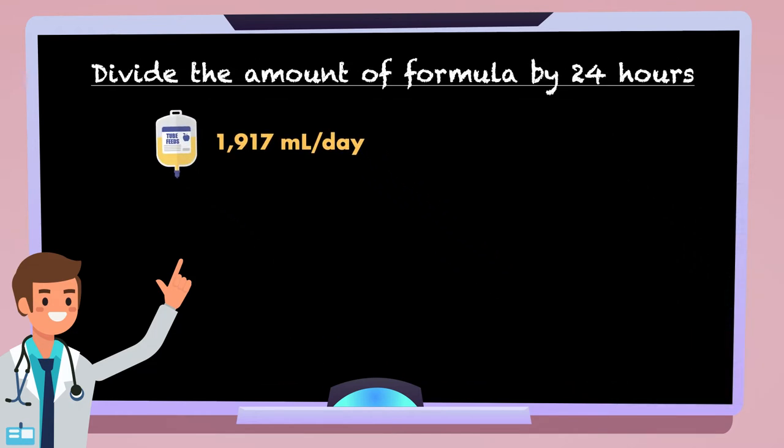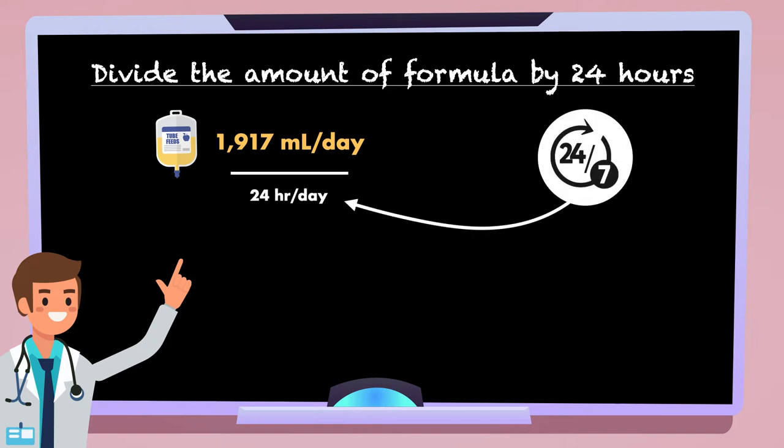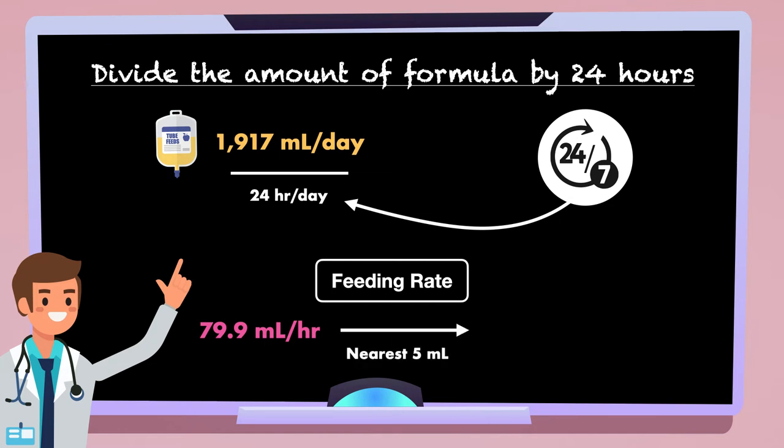Next, we divide the amount of formula by 24 hours since the goal is to provide a continuous feeding regimen. This step gives us the feeding rate expressed in milliliters per hour. 1,917 milliliters per day divided by 24 hours per day equals 79.9 milliliters per hour, which we will round to the nearest 5 milliliters to 80 milliliters per hour.